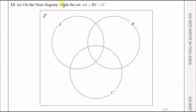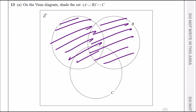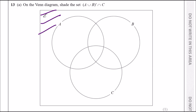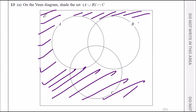Question 13a: shade the set (A ∪ B)′ ∩ C on the Venn diagram. A ∪ B covers everything in A and B. The complement of A ∪ B means everything outside both circles A and B.